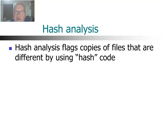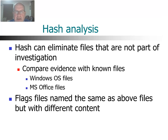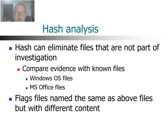Those files unique to that computer are the ones where you're likely to find evidence. This process also flags files that perhaps are named the same as an OS file but don't have the same content. A criminal will sometimes rename their file to match a name that's normally part of the operating system — one that doesn't get used very often — to make it look like it belongs to the OS when it's actually hiding evidence. The hash will red-flag those files.